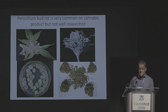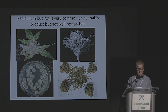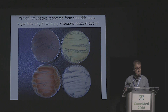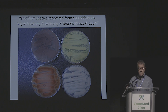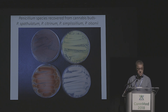We actually found there is a Penicillium bud rot. We were able to identify Penicillium species on petri dishes from various production sites. These Penicillium species are diverse; some were first reported by Medicinal Genomics two years ago in a study where they were the first to actually report Penicillium species on cannabis. We're seeing a diversity of species — Penicillium citrinum and various others on product — and some of these are mycotoxin producers.